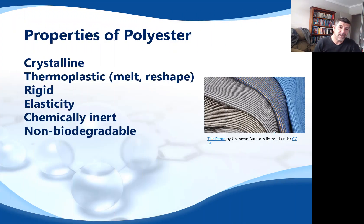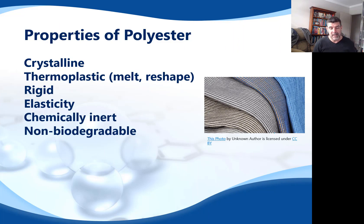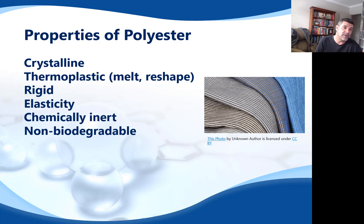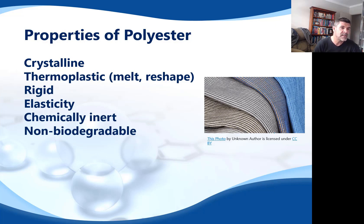We've had a quick look at the structure of PET, so now let's go into a bit more detail on its properties. Because the molecule is relatively compact — the benzene ring does increase its volume a little — these molecules are fairly regular and therefore crystalline. It's a thermoplastic, which means we can melt it and reshape it, which is really important for fabric uses of polyester. It is also a rigid plastic with some level of elasticity.